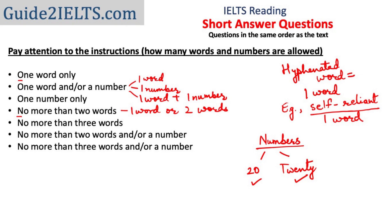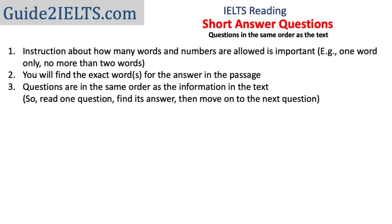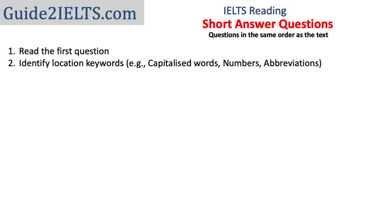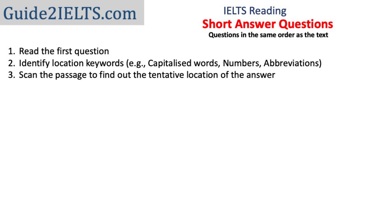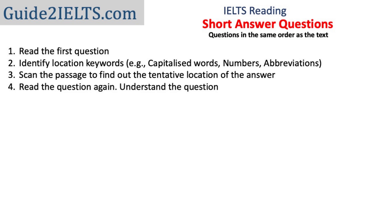Another important point: you will find the exact word or words in the passage that are the answer to your question. The questions are in the same order as the information in the text. To solve this type, read one question, identify the location keywords, and scan the passage — scanning means reading quickly while looking for specific information. Once you have a tentative location, go back to the question, reread it, and understand it thoroughly. The language in the question is usually simpler than the language in the passage, so understanding the question thoroughly before looking for the answer in the passage really helps.